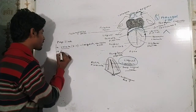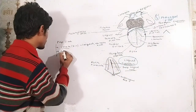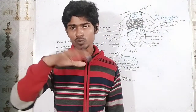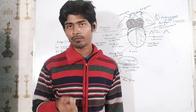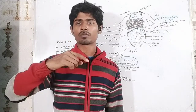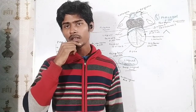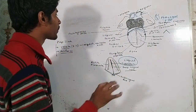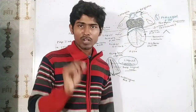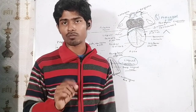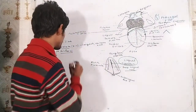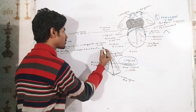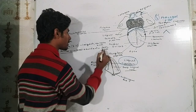Now let us talk about the filiform papillae. The filiform papillae are the smallest papillae present on the dorsal surface of the tongue, but they are the most abundant type. They are present in the center of the tongue and on other parts as well. The filiform papillae do not contribute to taste perception because they have no taste buds.